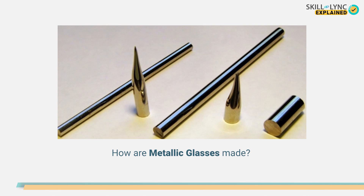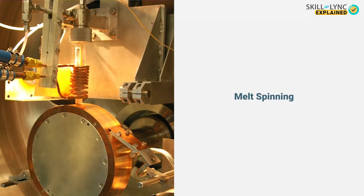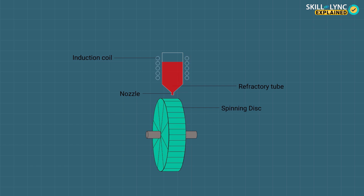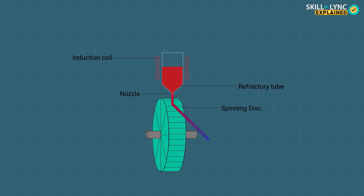But how are these metallic glasses made? Melt spinning is the most common metallic glass manufacturing method. The apparatus consists of a spinning disk made of copper placed below a refractory tube. The refractory tube has a nozzle at the bottom and is surrounded by induction coils. The metals in the correct proportion are taken in the refractory tube and melted by the heating of induction coils. The molten metal flows onto the spinning disk through the nozzle, and metallic glass as a thin ribbon is thrown out because of the centrifugal action of the spinning disk.